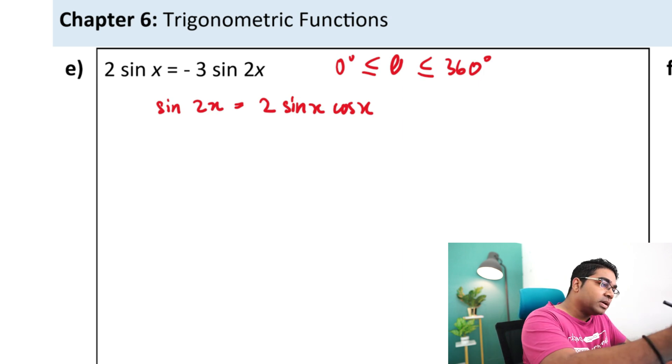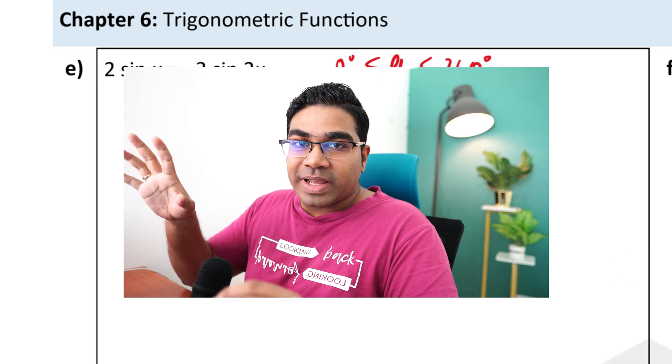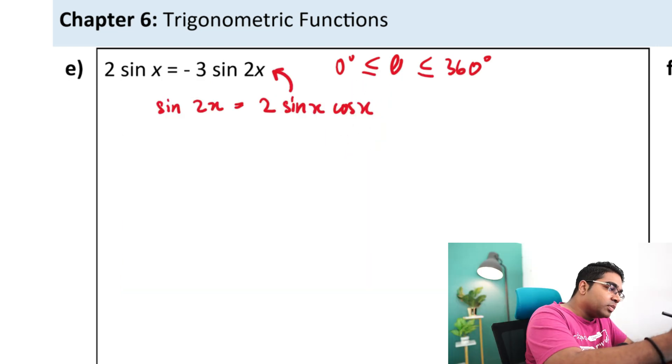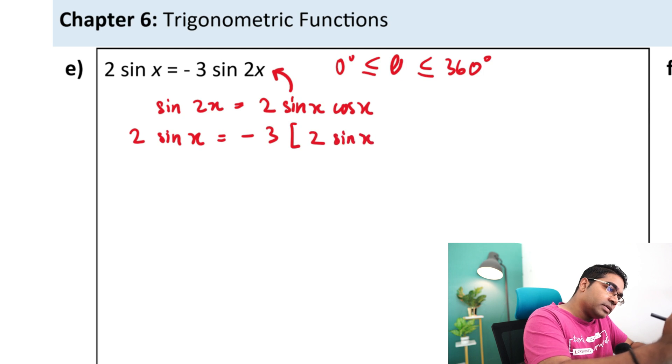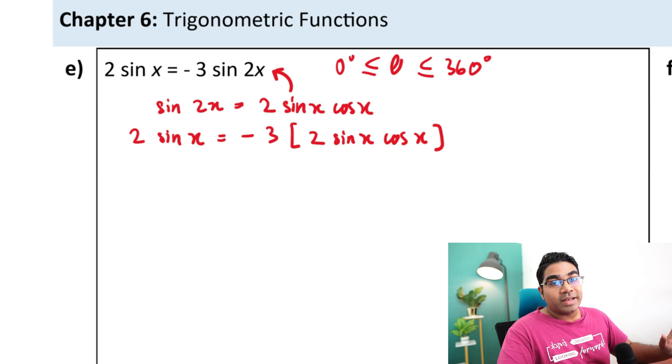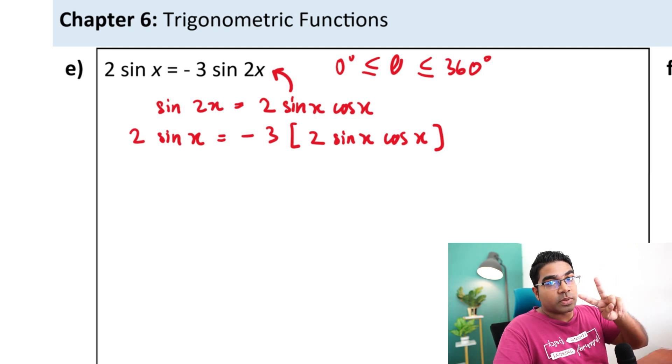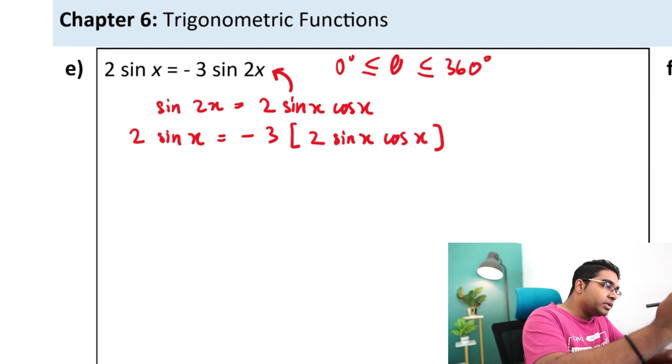We just have to apply this into this equation so that we can get an equation in terms of sine x. This will be 2 sine x is now equals to negative 3. In the bracket we have 2 sine of x cosine of x. And now we can eliminate 2 on both sides of the equation by dividing it with 2 and so 2 will be eliminated.